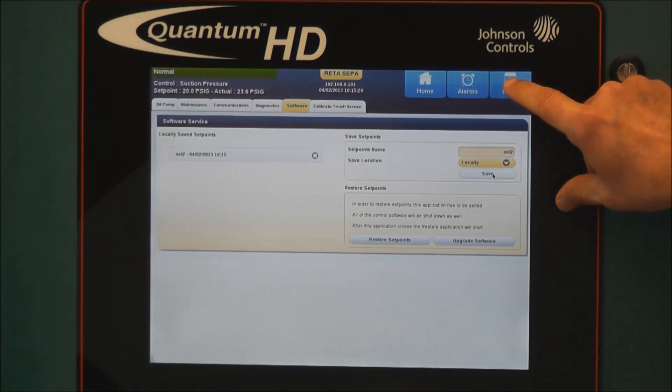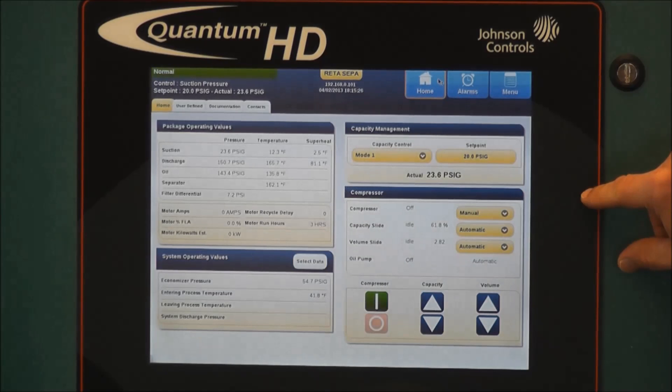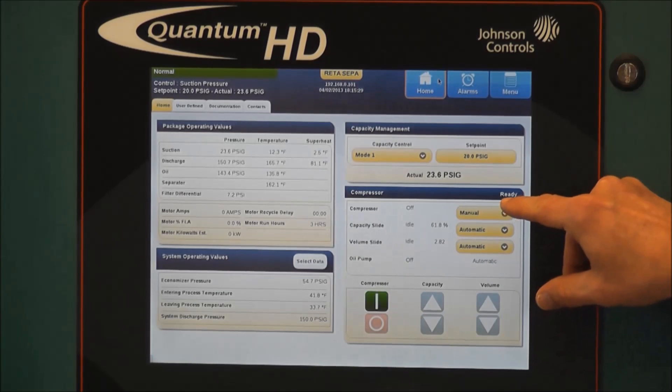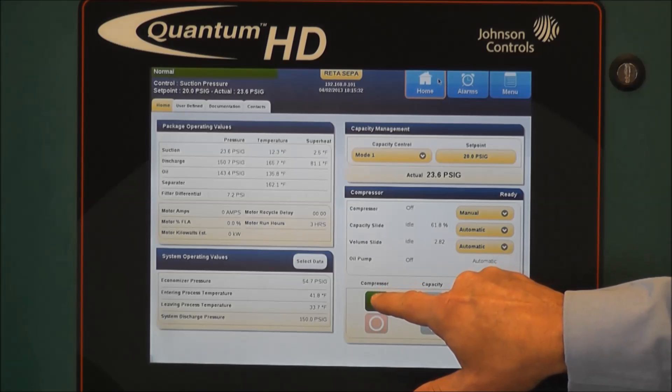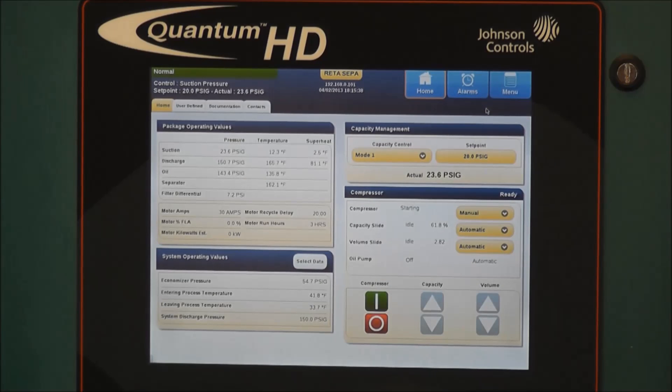Once we are completed now, we can go back to home. And once we're on home, we see that our compressor is ready to run. So you simply hit the start button and confirm the start command by pressing yes. And now your compressor is up and running and back in operation.